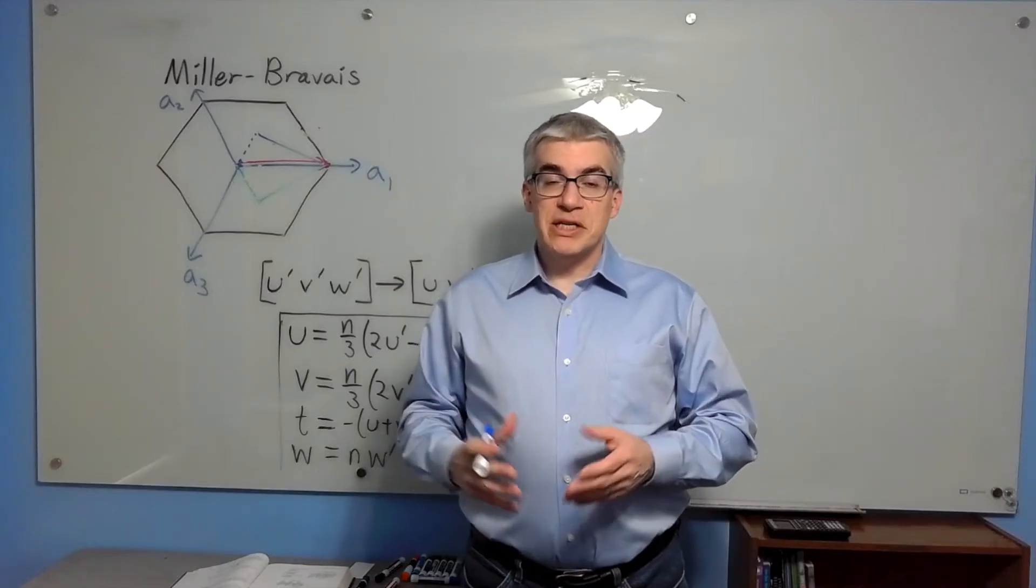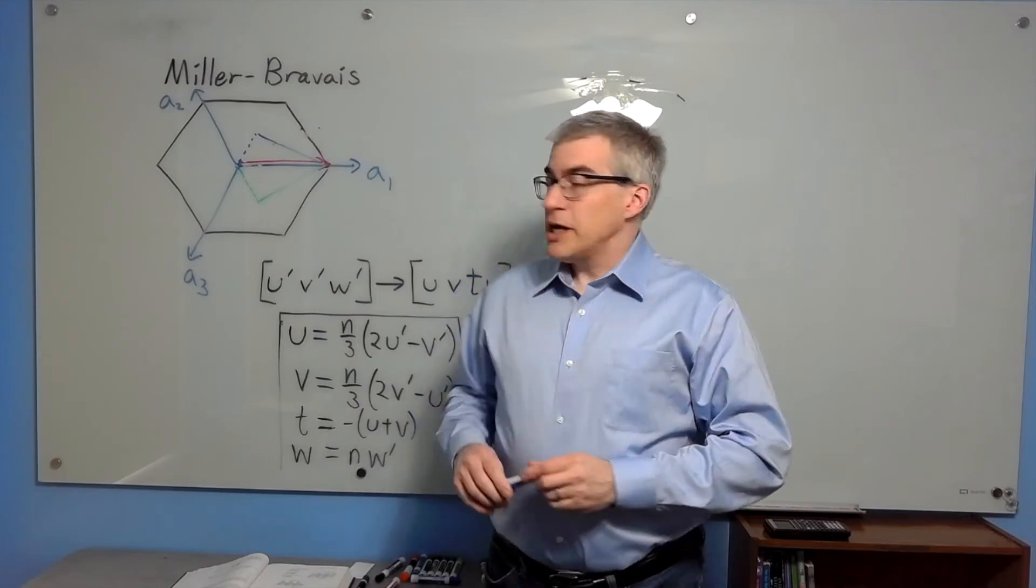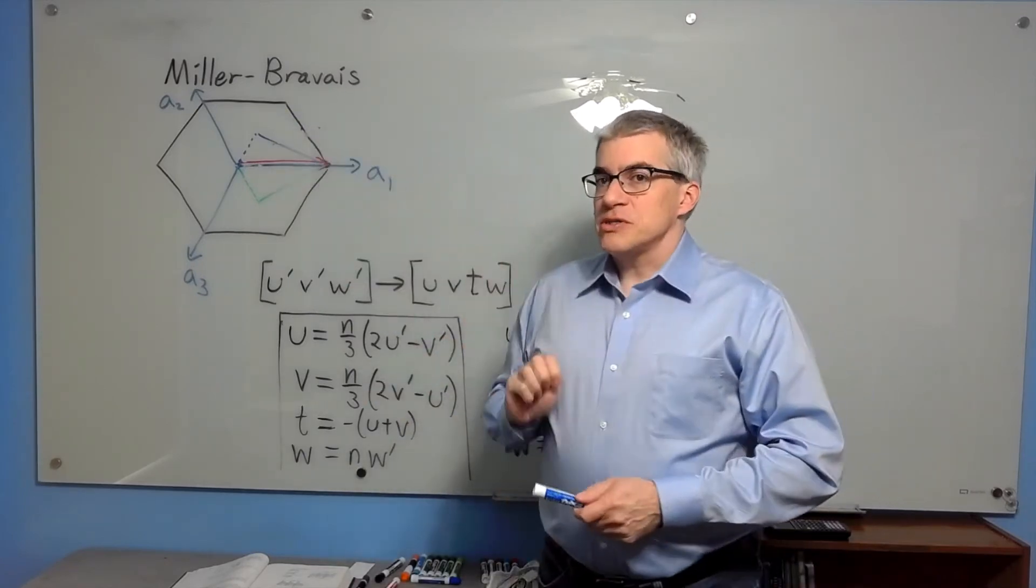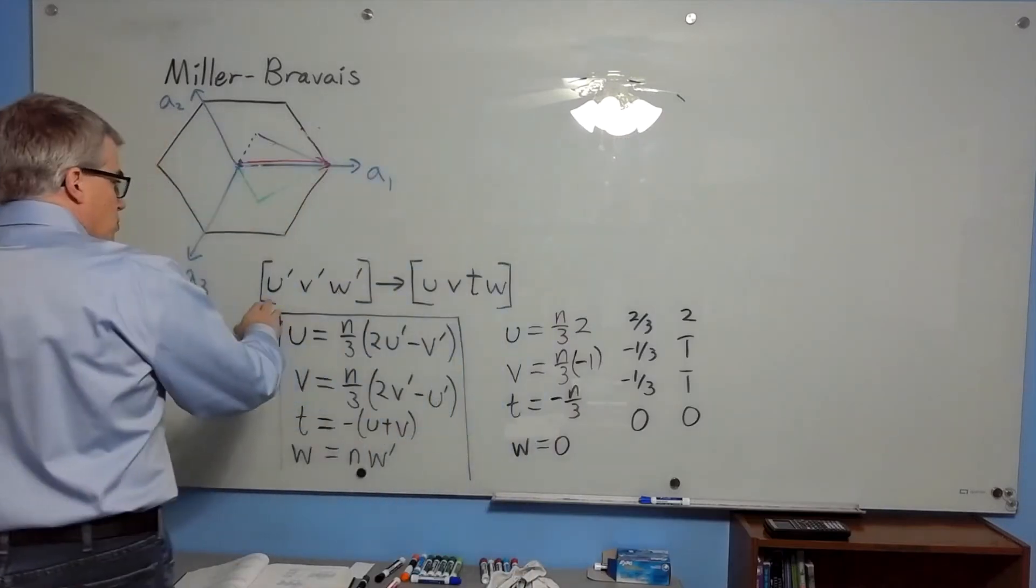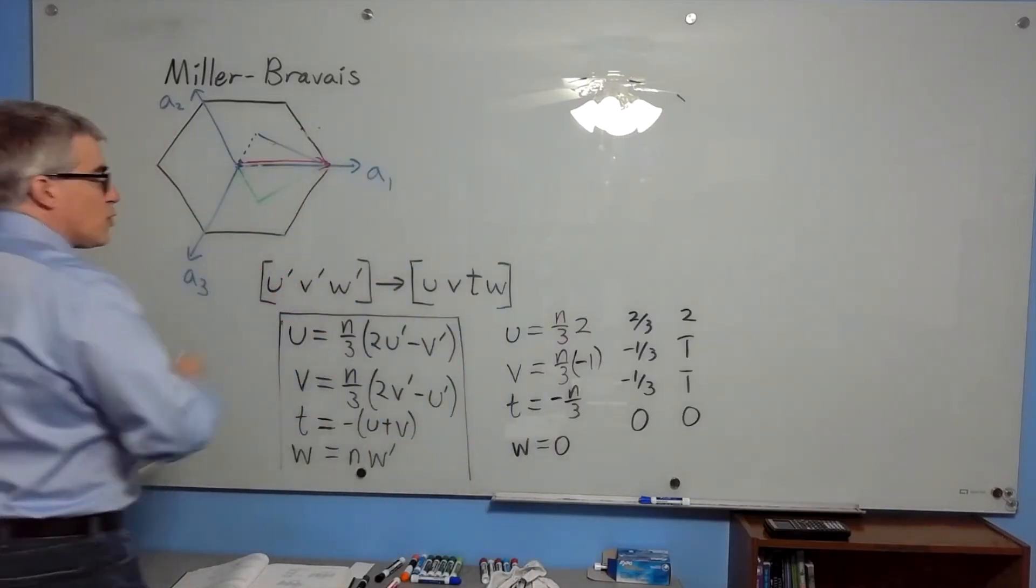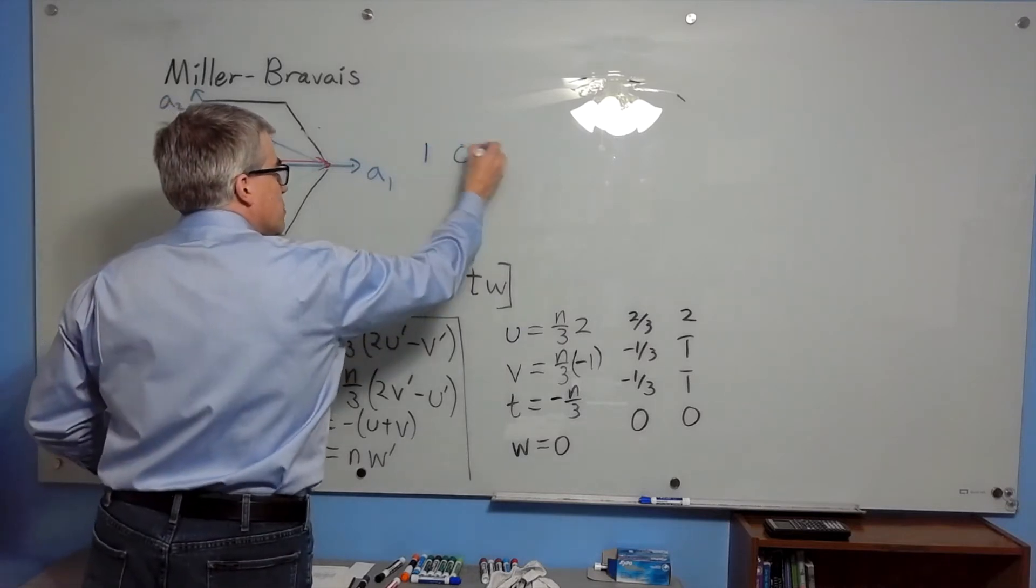To describe directions in hexagonal crystals, we have to use the Miller-Bravais system. It's going to be four coordinates instead of three. You start out with an ordinary three-dimensional u prime, v prime, w prime. For example, 1, 0, 0.